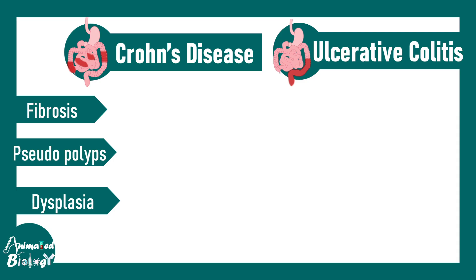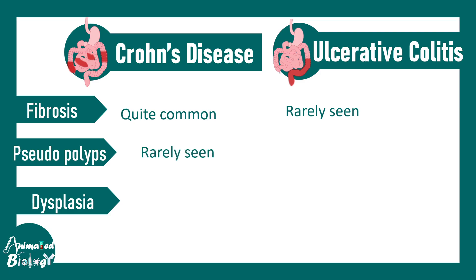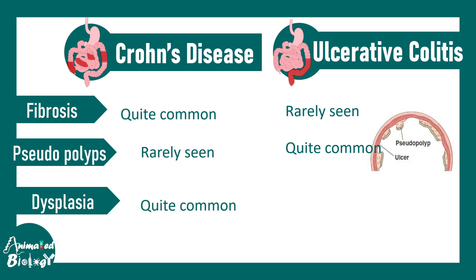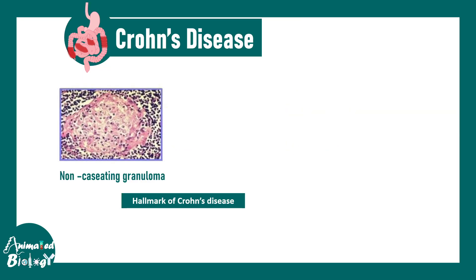Fibrosis is quite common in Crohn's disease but rarely seen in ulcerative colitis. Pseudopolyps are rare in Crohn's disease but quite common in ulcerative colitis. Dysplasia can be seen in Crohn's disease but not as much in ulcerative colitis. It's important to note that pseudopolyps are very common in ulcerative colitis.